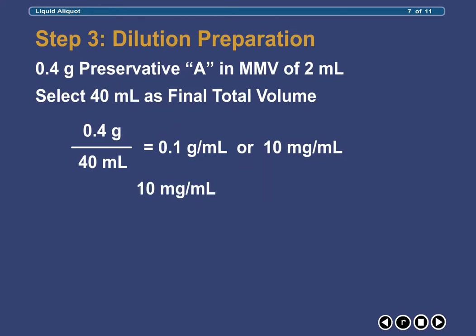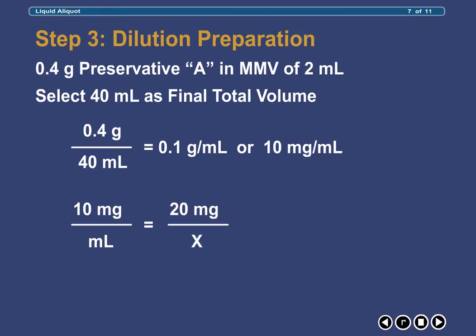Next, we need to determine what volume of this dilution will provide us with 20 milligrams of Preservative A that we desire. We see that 2 milliliters of the 10 milligrams per milliliter dilution will provide 20 milligrams of Preservative A.